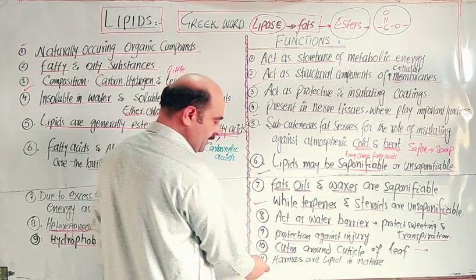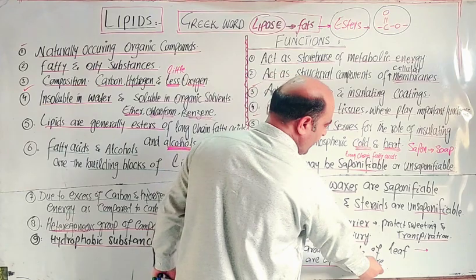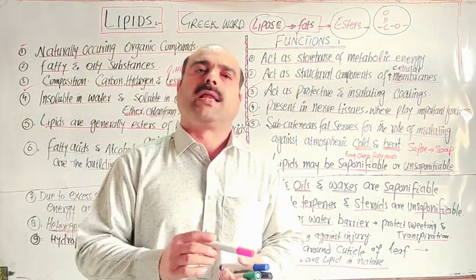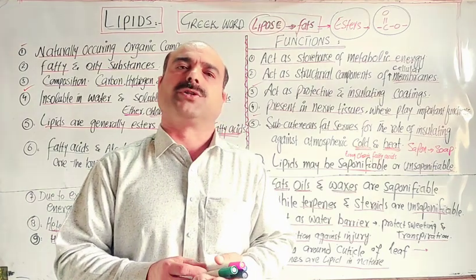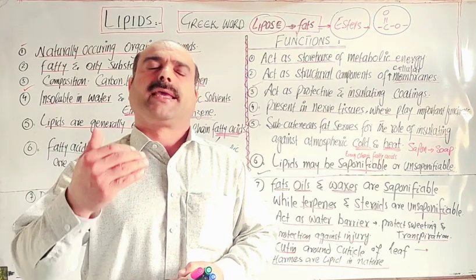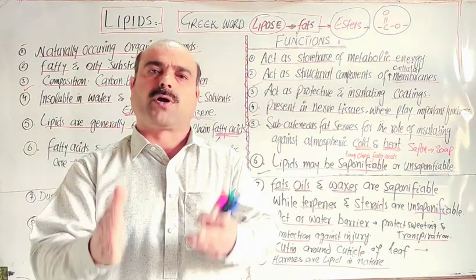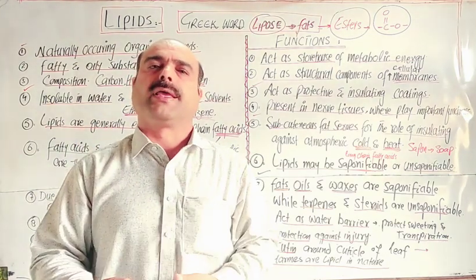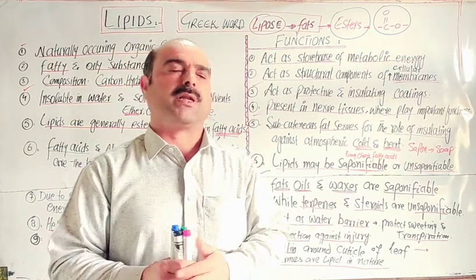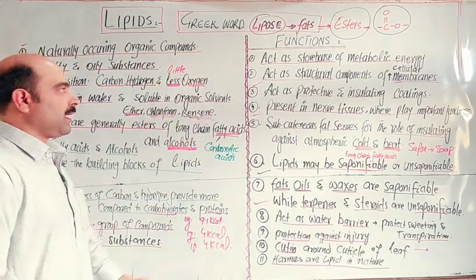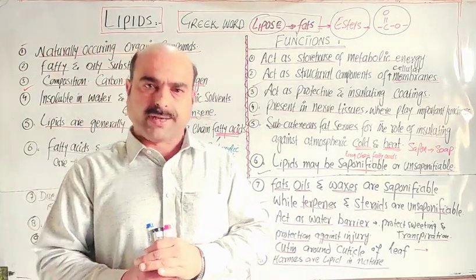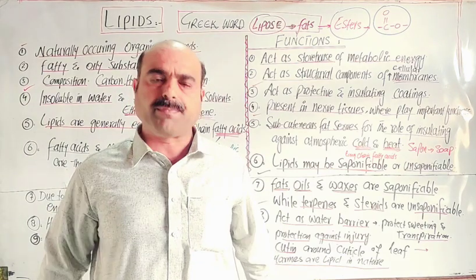Some hormones are lipid in nature. Hormones are chemical substances secreted in one part of the body that control functions in another part of the body. So students, these were all about the basic introduction and the functions of lipids. Next time we will discuss the classification of lipids. Thanks a lot for watching the video.